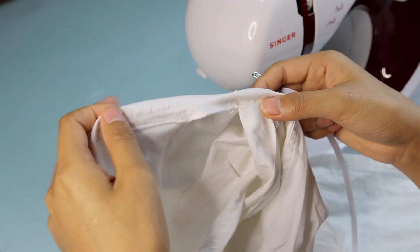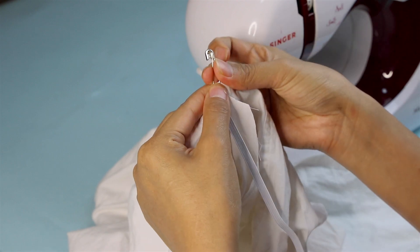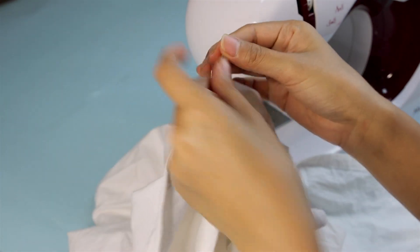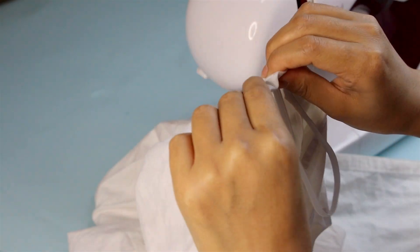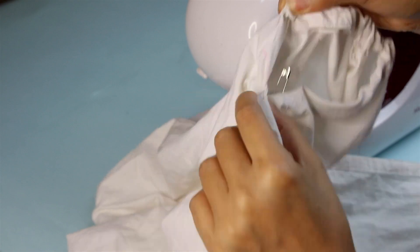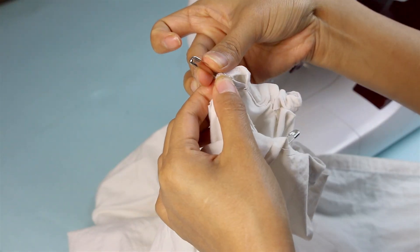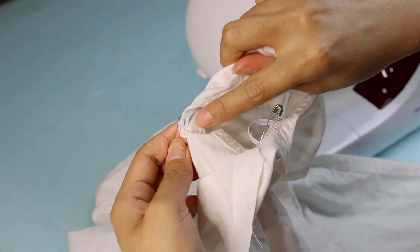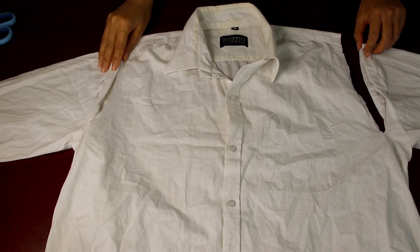Once the tunnel is ready, I took an elastic 10 inches long and pinned one edge to one side of the tunnel with the help of a safety pin, and passing the elastic through the tunnel. And pinning the other edge on the other side of the tunnel and going to secure it. Sewing both the edges of the elastic with a straight stitch.